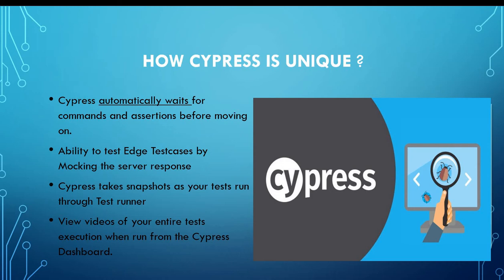Next: you can view videos of your entire test execution when run from the Cypress dashboard. The Cypress dashboard is another incredible, very powerful web feature that no other automation tool can give you. It provides end-to-end debugging features — you can automatically save videos and screenshots, and it gives you a total report showing how many test cases ran, how many passed, how many failed, plus analytic reports. It's a separate but integrated web feature that comes with Cypress. It has a paid version for more than three users, but up to three users it's free.